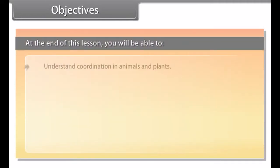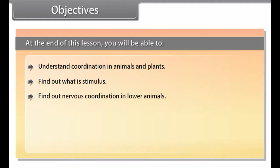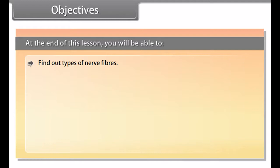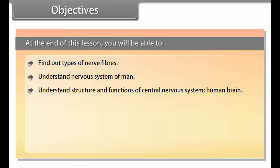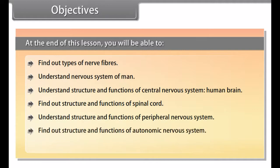At the end of this lesson, you will be able to understand coordination in animals and plants, find out what is stimulus, find out nervous coordination in lower and higher animals, understand the unit of the nervous system, find out types of neurons and nerve fibers, and understand the nervous system of man including the central, peripheral, and autonomic nervous systems.